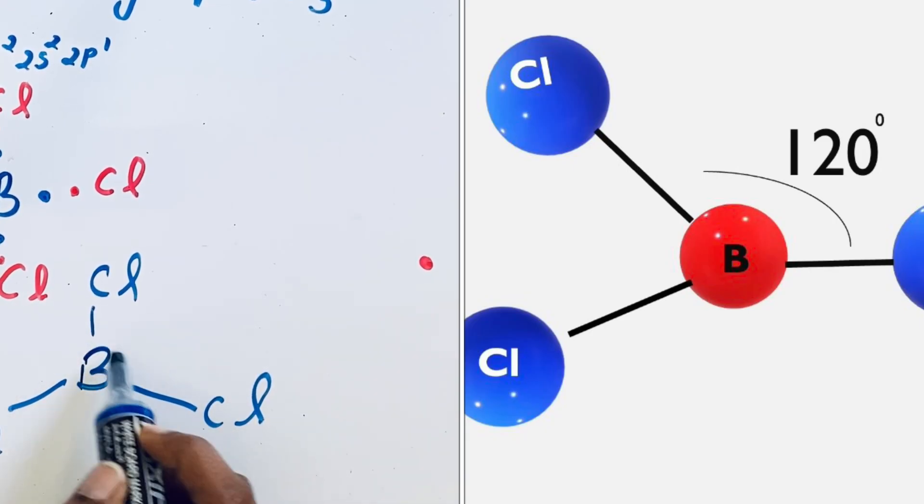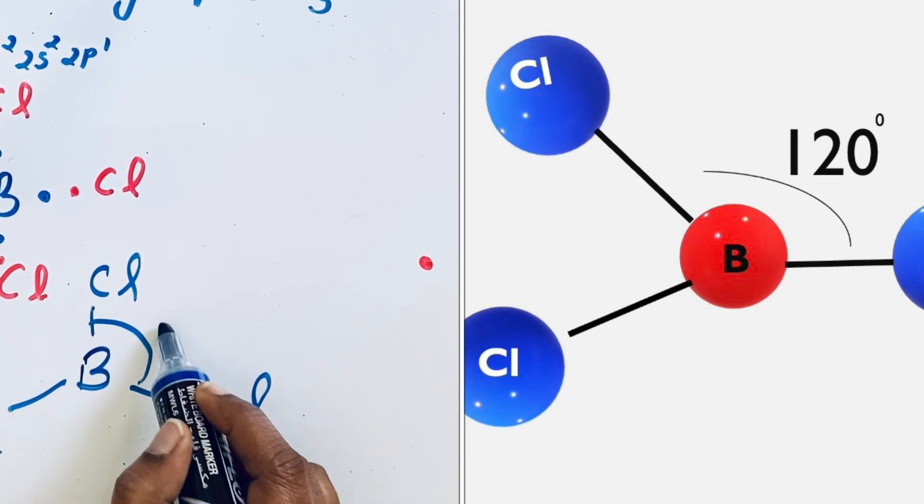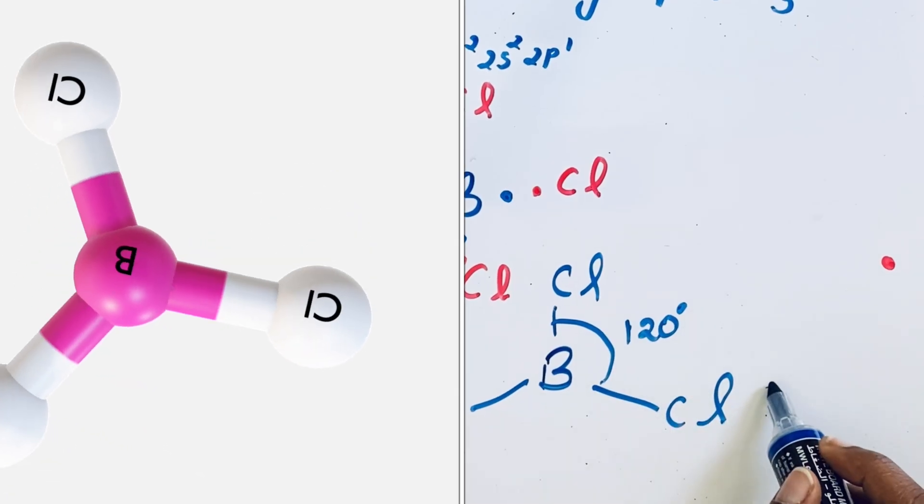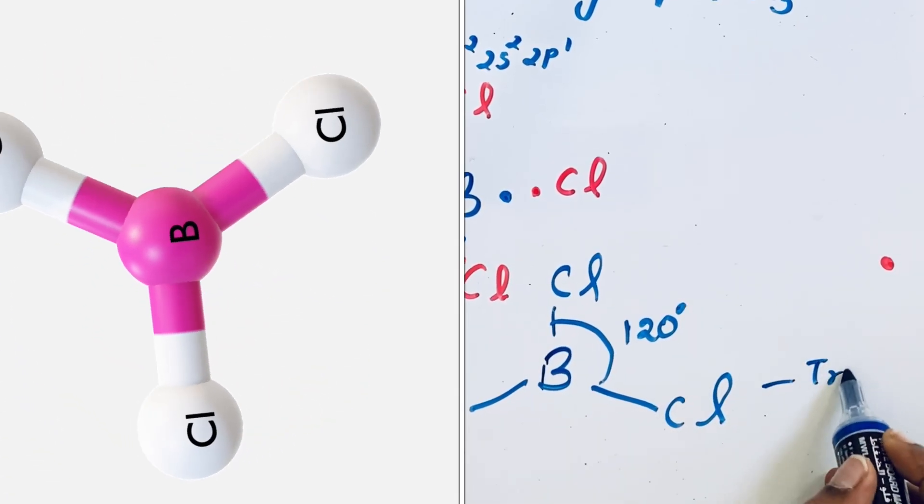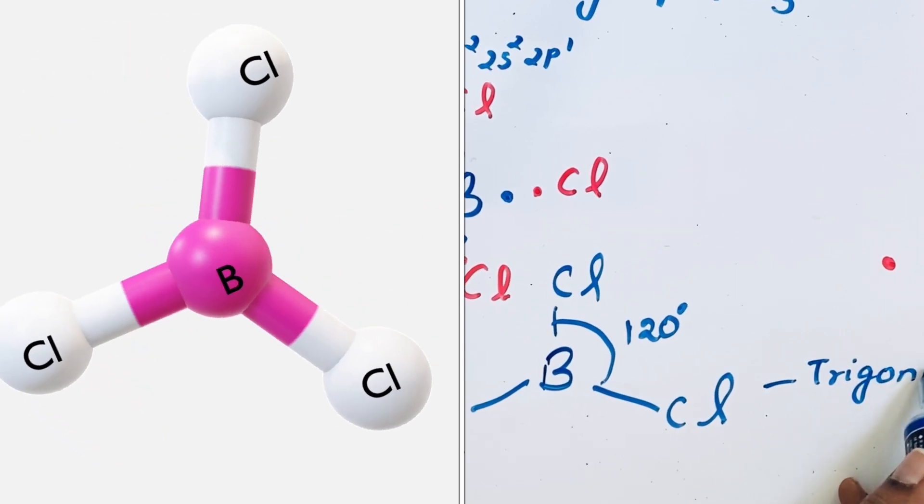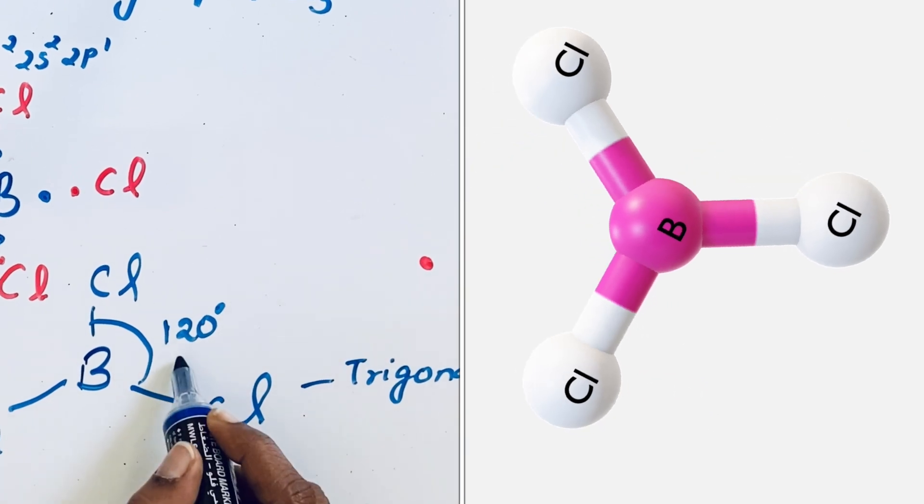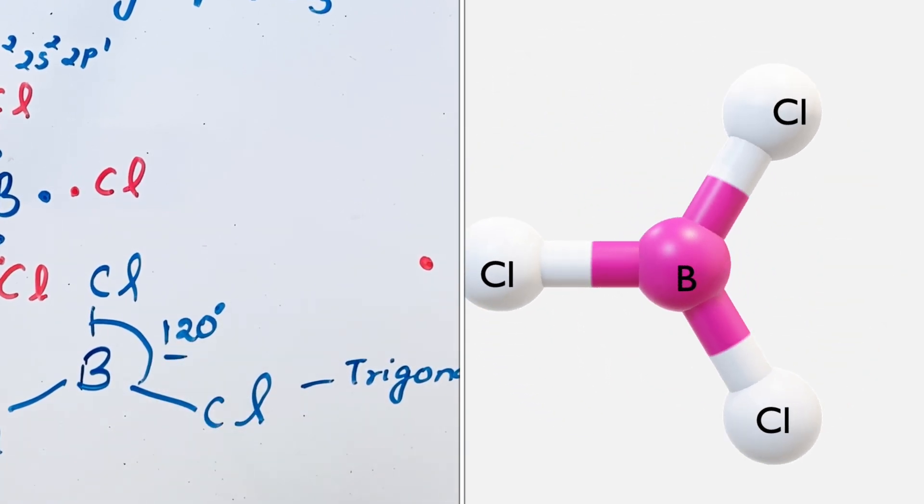They try to maximize the distance between them. That is why the bond angle becomes 120 degrees. In BCl3 molecule, the molecular geometry is trigonal planar and the bond angle is 120 degrees.